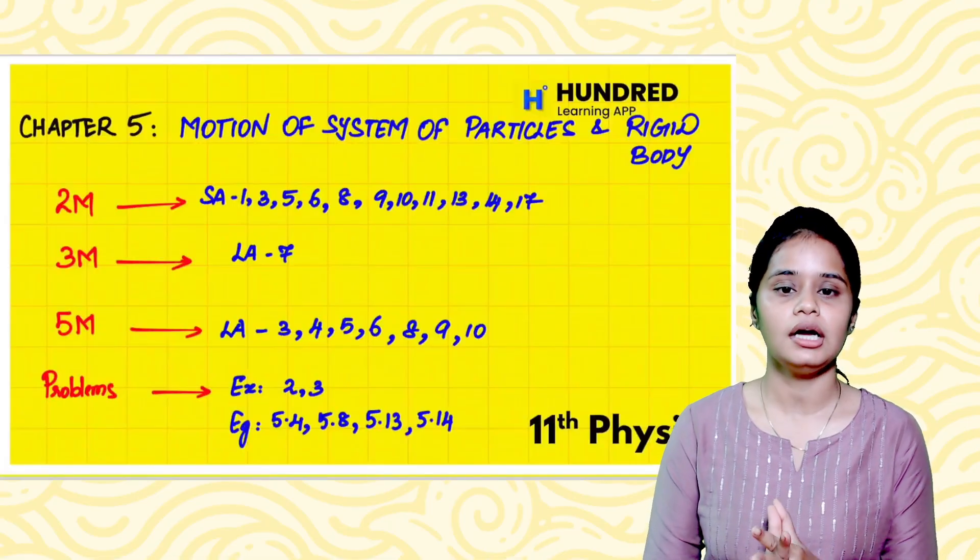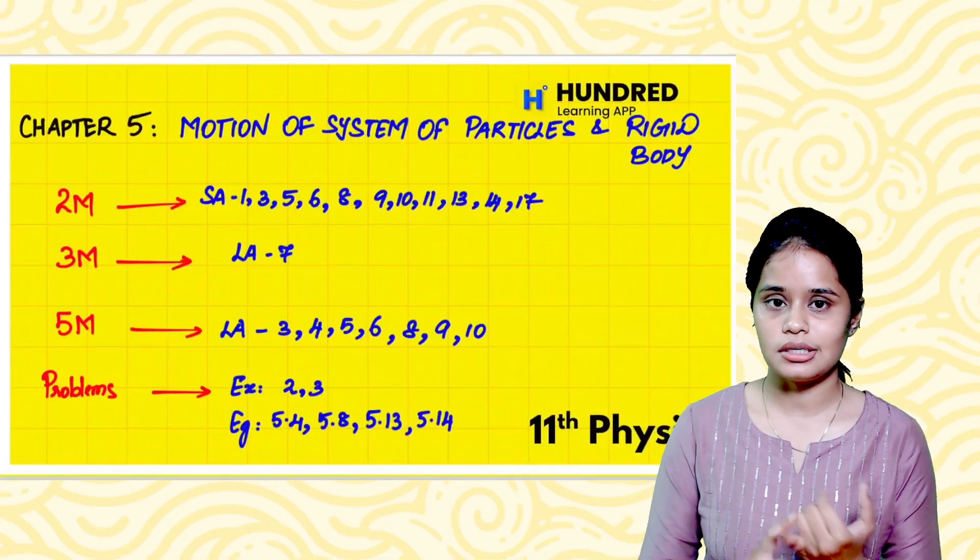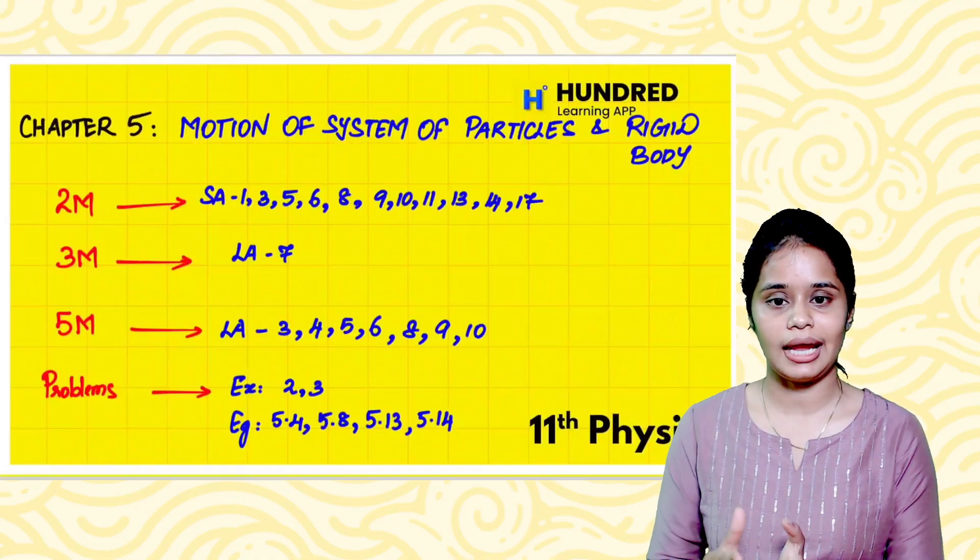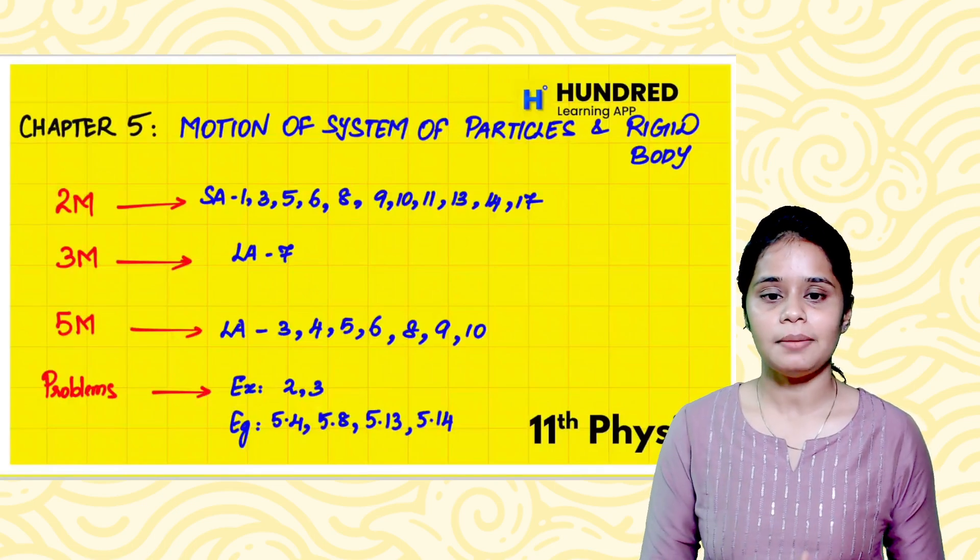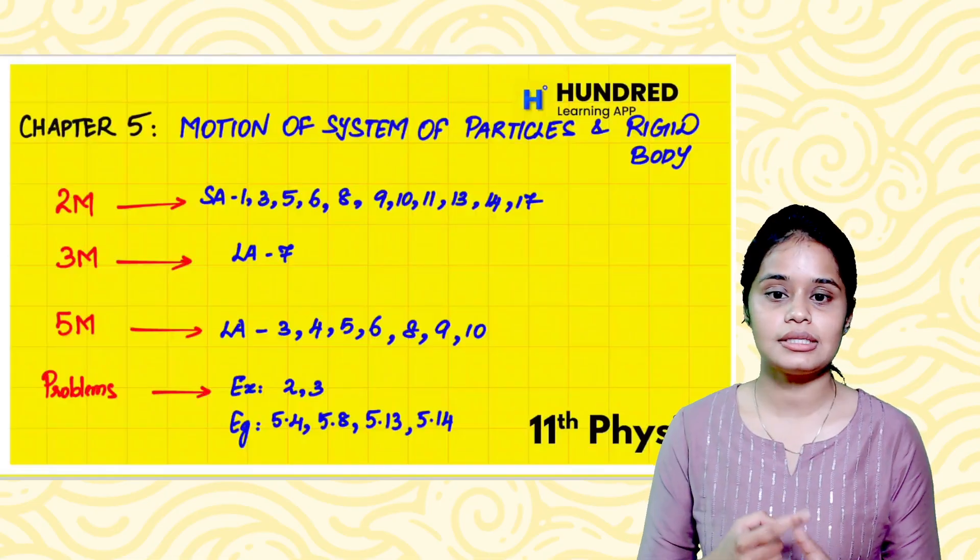In the fifth chapter, for short answer questions: 1, 3, 5, 6, 8, 9, 10, 11, 13, 14, 17. In the fifth chapter for long answers: 3, 4, 5, 6, 8, 9, 10.